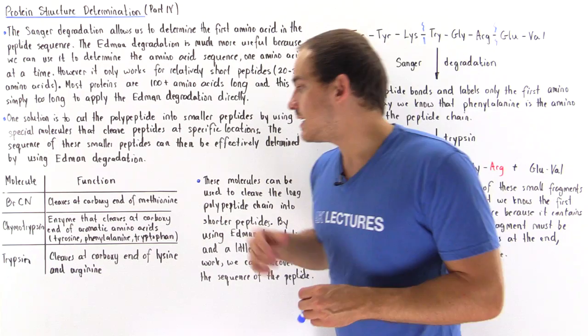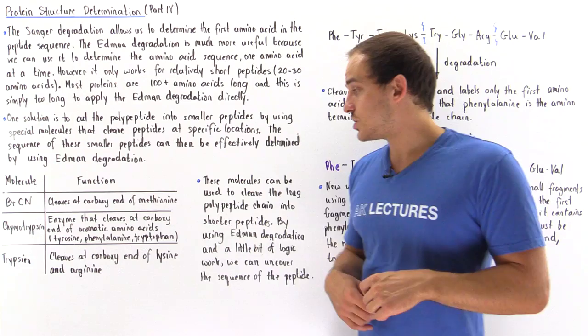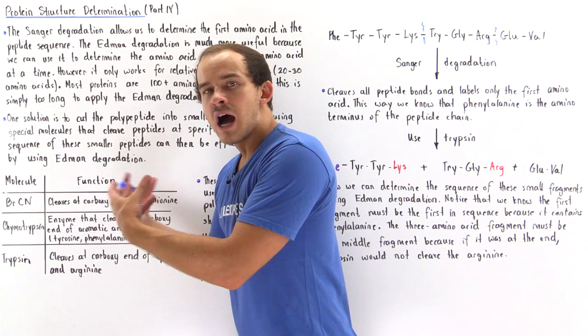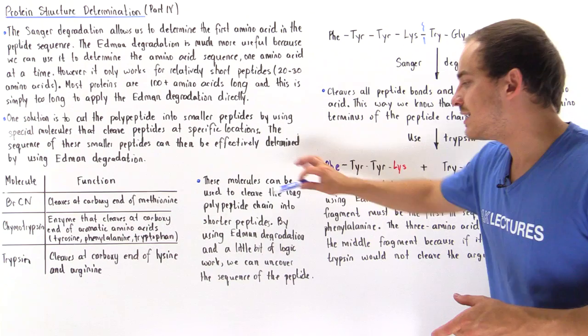Trypsin is another biological molecule that also cleaves at the carboxy end, but it cleaves at the carboxy end of two amino acids: lysine and arginine. By using these types of molecules, we can break the polypeptide into smaller peptides and then use the Edmond degradation along with a bit of logic to uncover what the sequence of amino acids is.